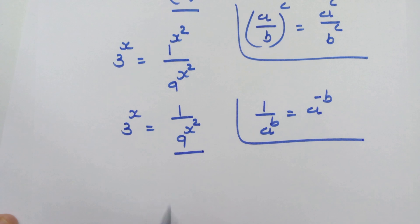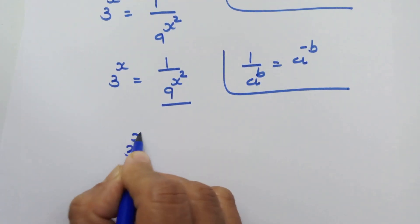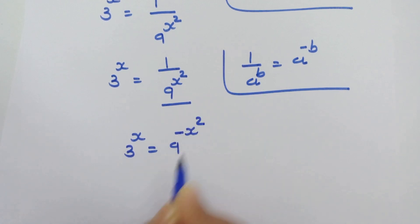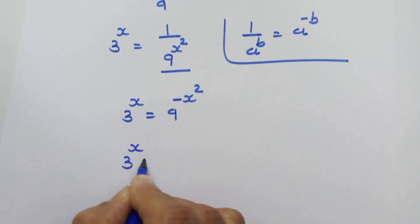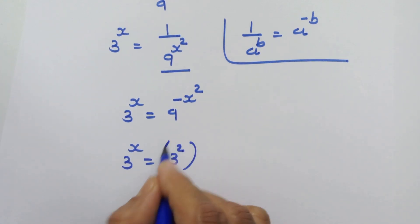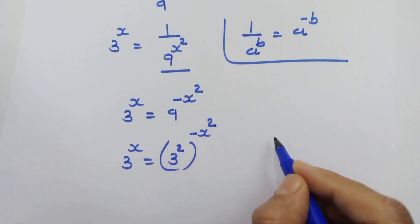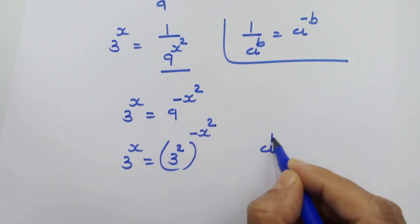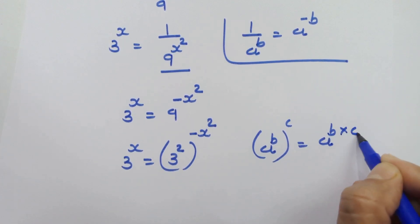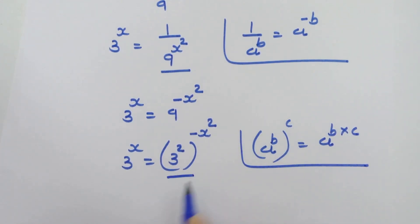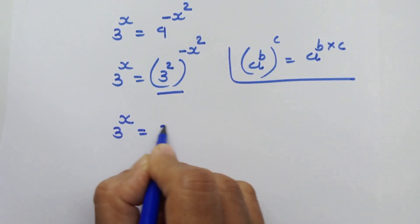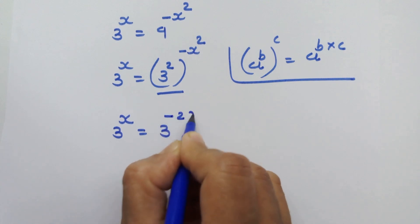By using this rule on this side, we can write 3 raised to x is equal to 9 raised to minus x square. Now our next step: 9 is 3 squared, so we can write this as 3 squared whole raised to minus x square. If we have a raised to b whole raised to c, then we can write it as a raised to b into c. By using this rule here, we can write 3 raised to x is equal to 3 raised to minus 2x square.